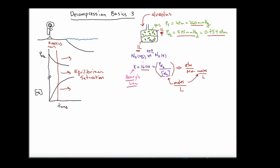The Henry's Law constant in units of atmospheres per molarity is 1600 at 25 degrees centigrade. The viewer will notice I'm using a temperature which is not body temperature. The reason is that it's actually quite difficult to find these concepts discussed at human body temperature in the literature, so I've used the Henry's Law constant based on the most common way I found it in my research.